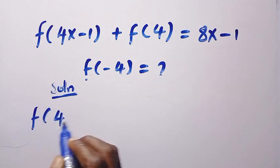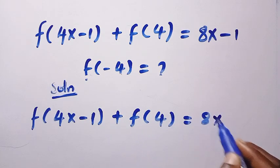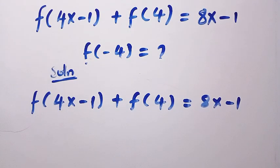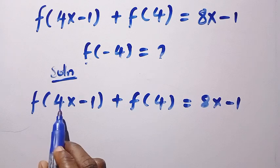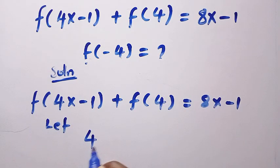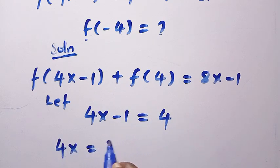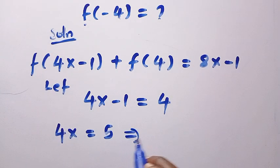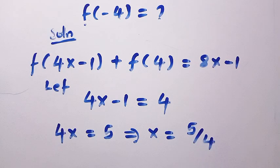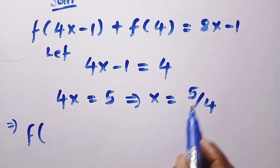From the question we have f of 4x minus 1 plus f of 4 equals 8x minus 1. So we start applying the substitution method. For the first part, from f of 4x minus 1, which is the domain of this function, if I let 4x minus 1 to be equals 4, then I want to make x the subject of the formula.